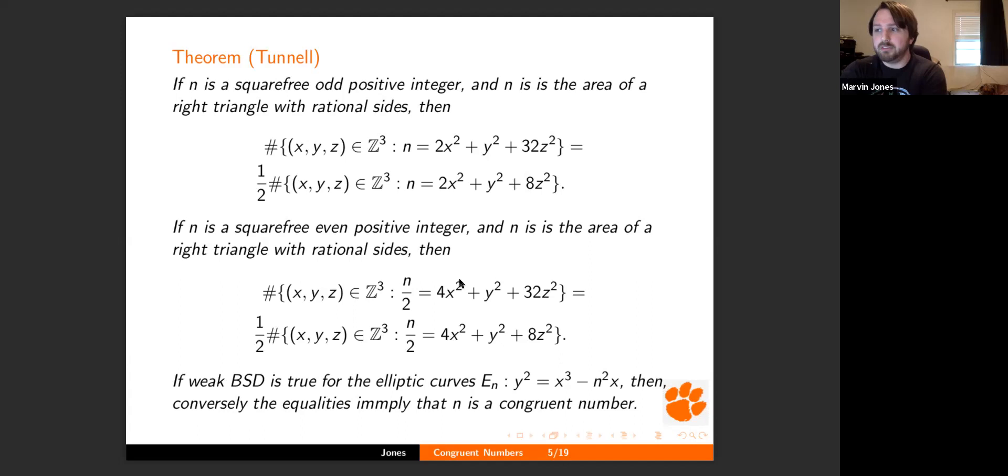I'm going to state what Tunnel's Theorem says to kind of give you an idea of why this is a nicer result than what we had with the classicals. So if I have a square-free odd positive integer and N is, in fact, the area of a right triangle, then this equality holds. That's a very strange-looking equality, but we'll mention kind of what that means in a second. The middle part is for even numbers. And if BSD is true, then